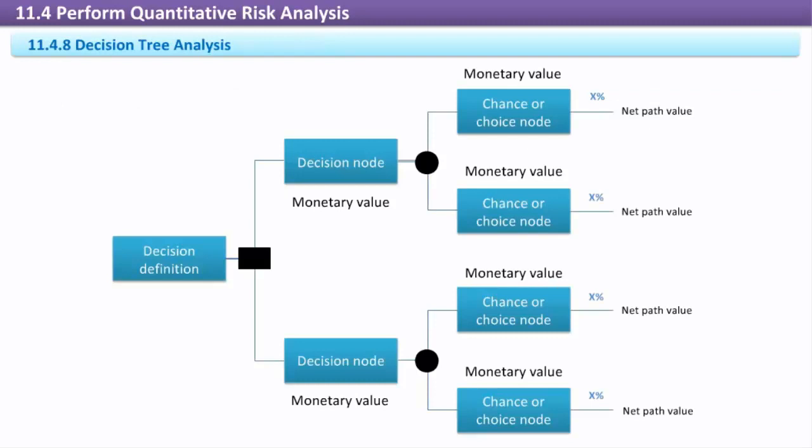Decision tree analysis. Decision trees visually map out options, and using EMV for each decision point results in a net value for each decision path. Even though a tool of quantitative analysis, decision trees are applicable to many project problems that have choices with levels of uncertainty.